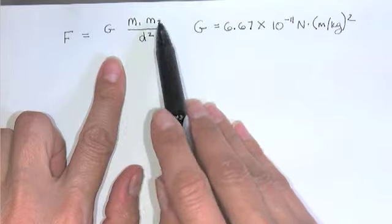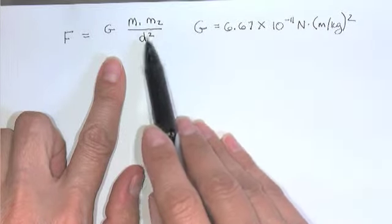Times the mass of the first object, times the mass of the second object, over the distance between the two of them.